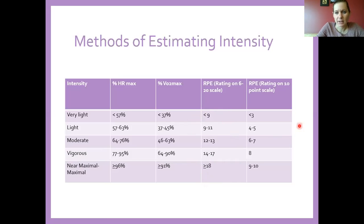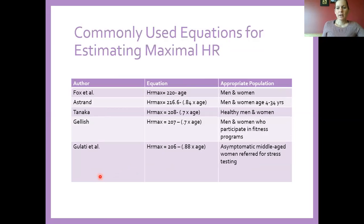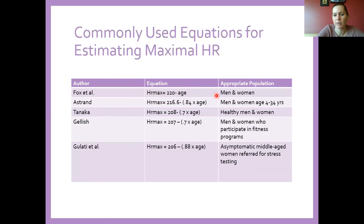For our assignment, we're going to use RPE on a one-to-ten scale and percentage of heart rate max, and we're going to calculate this for each of our clients. The easiest way to find someone's maximum heart rate is simply 220 minus their age. That's a fairly good estimate, appropriate for both men and women, and it's the most simplistic and most commonly used method.